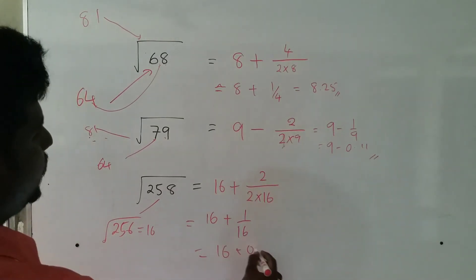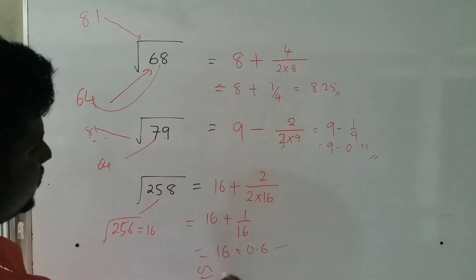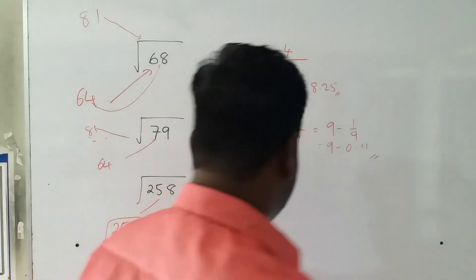So in that case, you are going to find this is 16 plus maybe 0.06 or something like that - about 16.06, something like that.